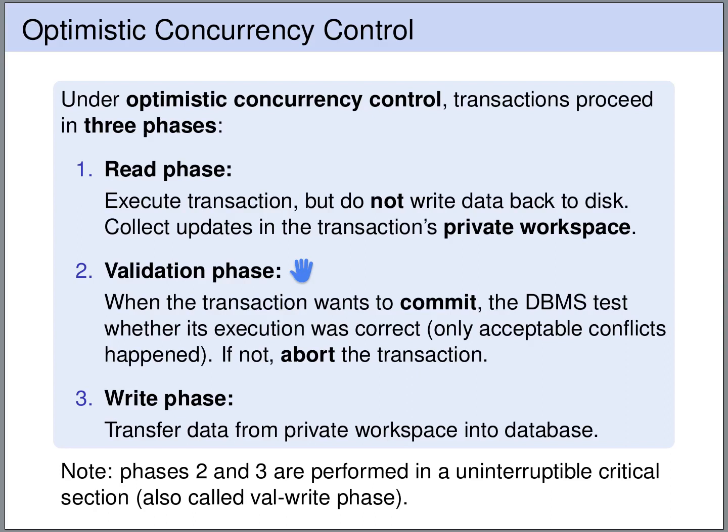If the current transaction is not aborted — so the check succeeds — then we get to the write phase, where the updates of the transaction are written to disk and made permanent in the database. Phases two and three are performed in an uninterruptible critical section.